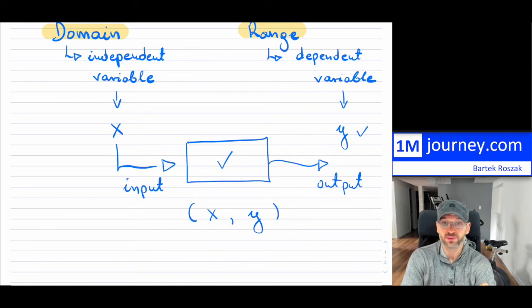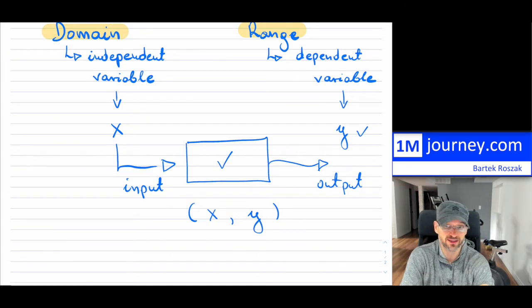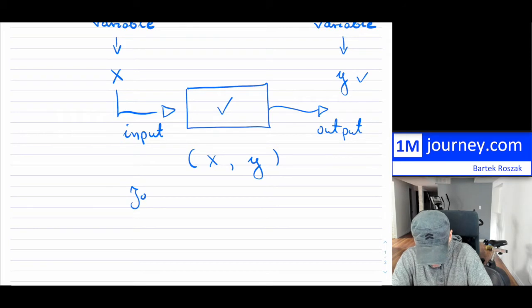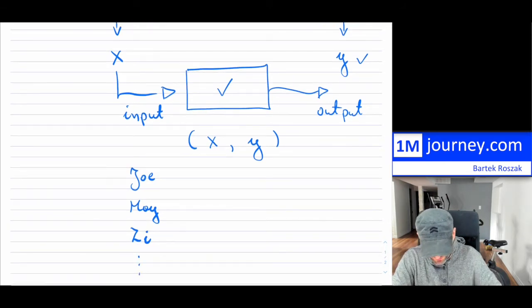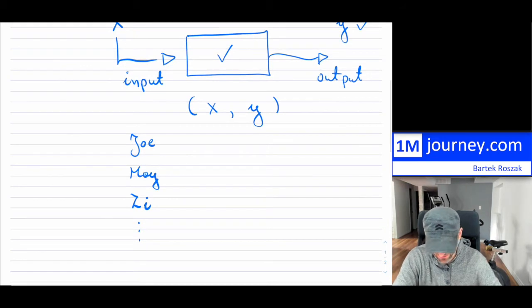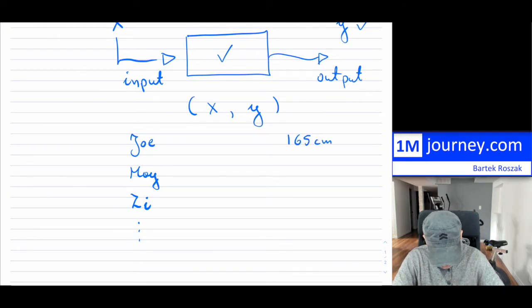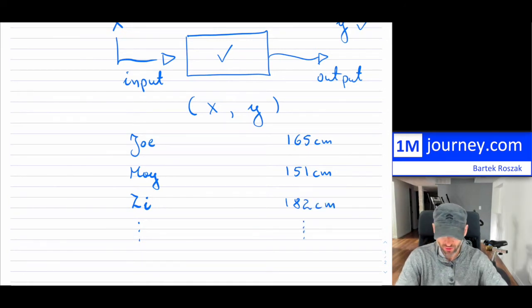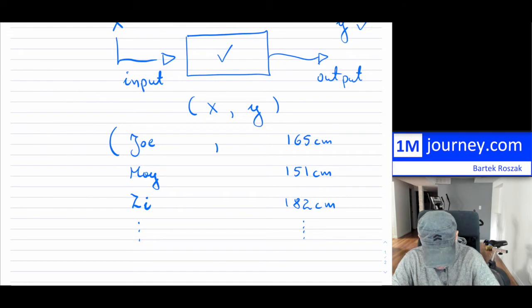They don't always have to be numbers. For example, you might be interested in studying the height of students in your class. You have Joe, May, Z, and so on — those could be your inputs, and then they have a certain height. Joe is 165 centimeters, May might be 151 centimeters, Z is maybe 182 centimeters, and so on.